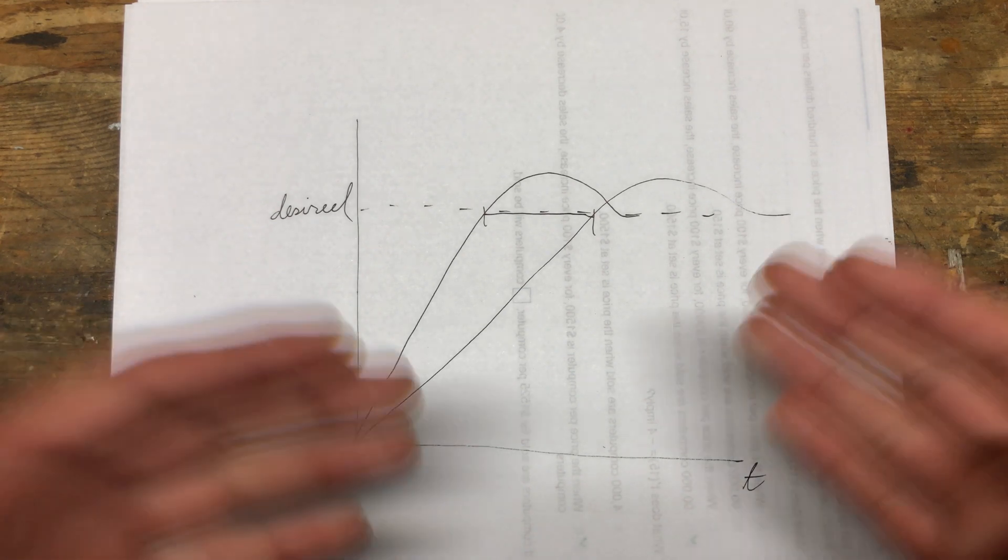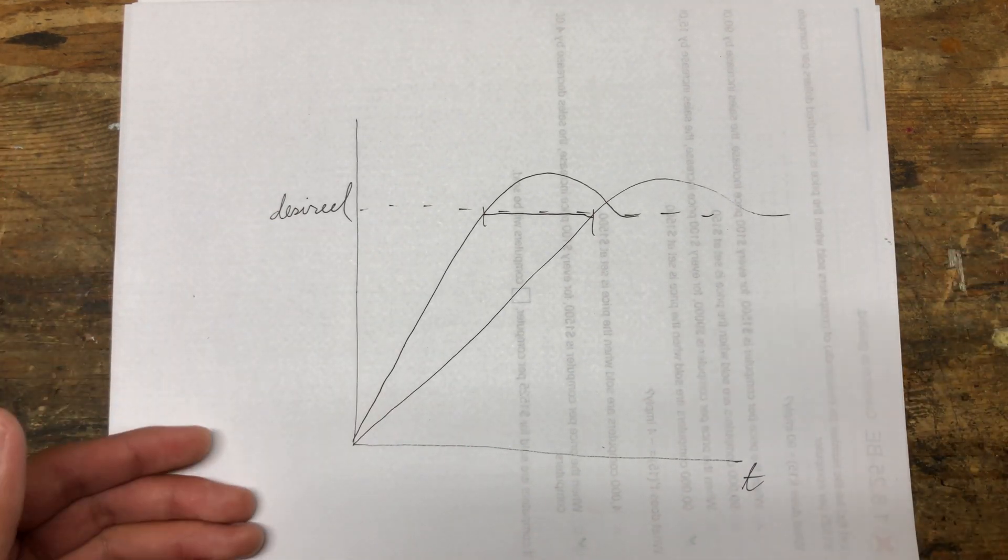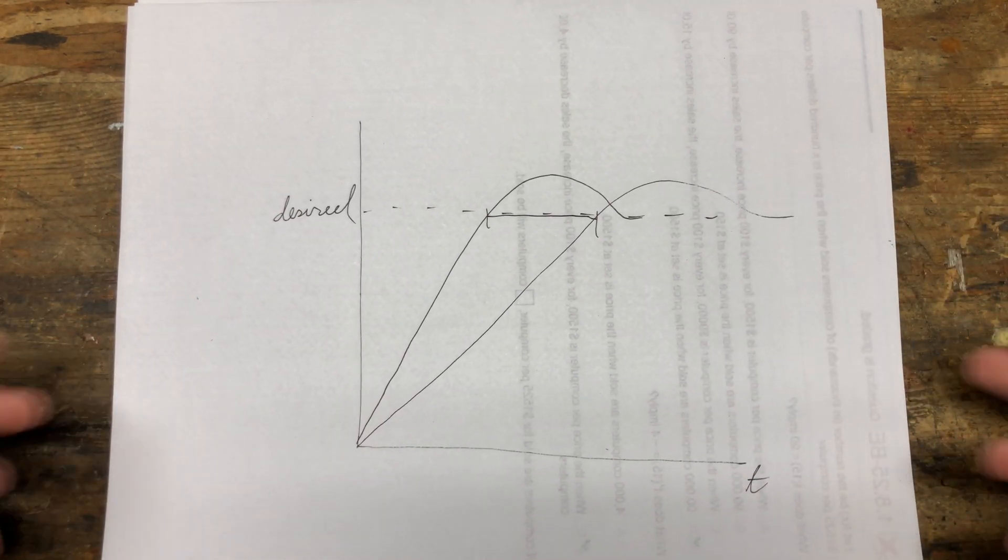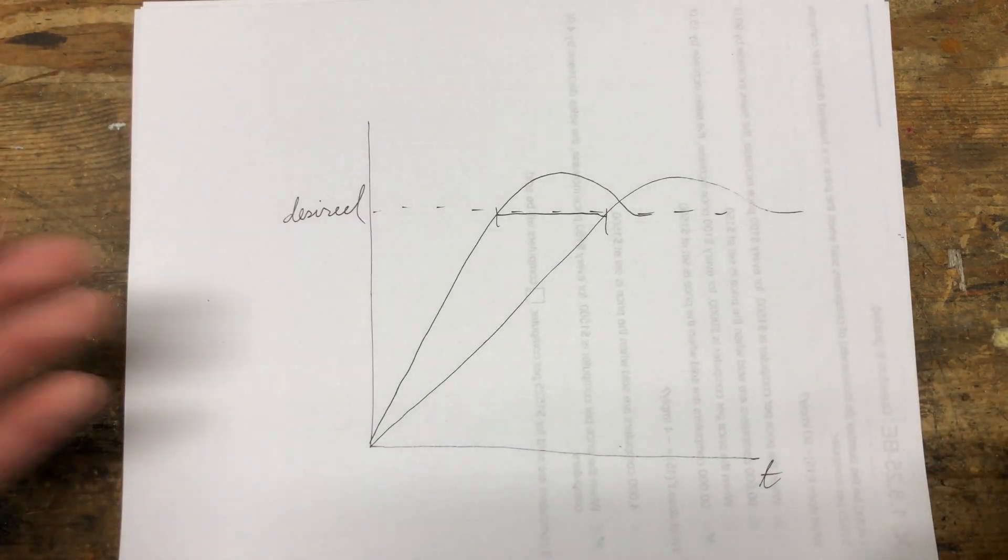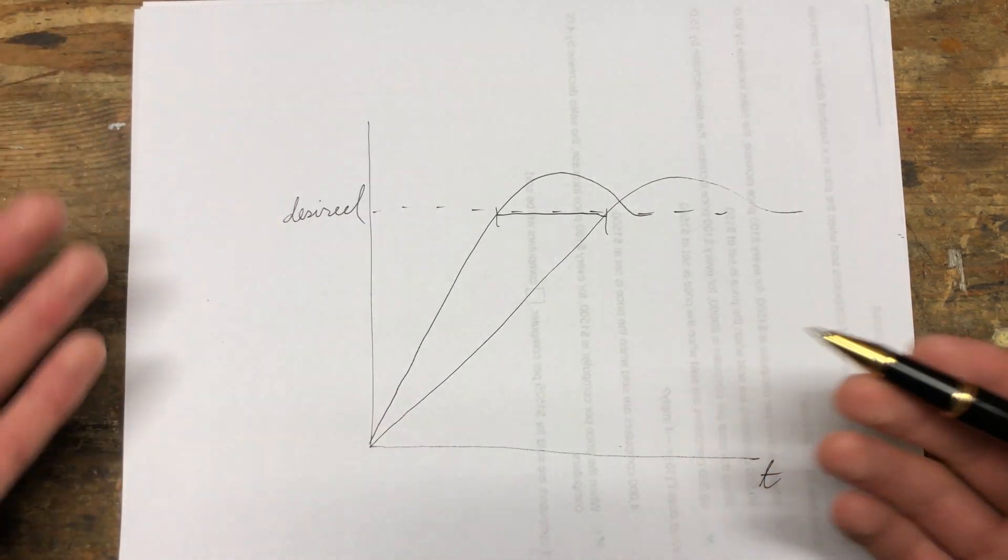Essentially, the ideal PID tune is where you're running a high enough D-gain so that the motors are getting maxed out. Of course, you want to have the P-gain increased by a proportional amount.